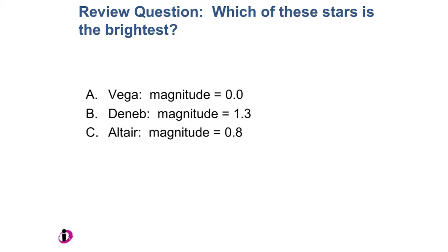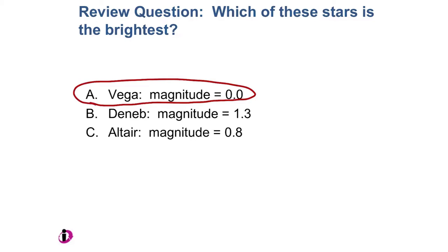I've given you the magnitude of each of these stars: 0, 1.3, and 1.8. The question is, which one is the brightest? The magnitude system is weird in a couple of ways — it's logarithmic, and also it is backwards. So the smaller the number, the brighter the star. In this particular case, Vega, having the smallest magnitude number, is the brightest star of these three. Altair would be the next brightest, and Deneb would be next.